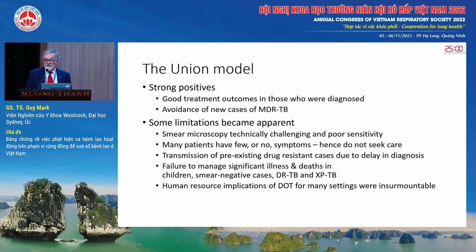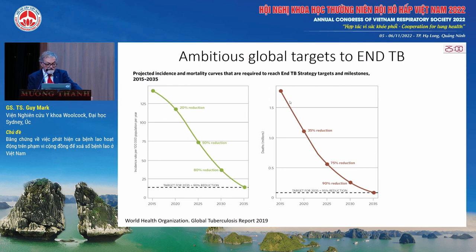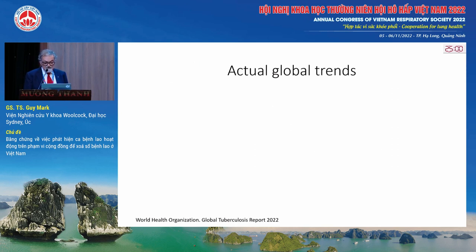The Union model achieved a great deal, and we should be proud of what it has achieved, but it did not end TB. The global community has been very ambitious in setting targets for ending TB — targets set in 2015 — that we should end TB, or virtually end TB, by 2035. This shows the projected decline in TB incidence and deaths between 2015 and 2035. We're very good at setting targets; we're not so good at achieving them.